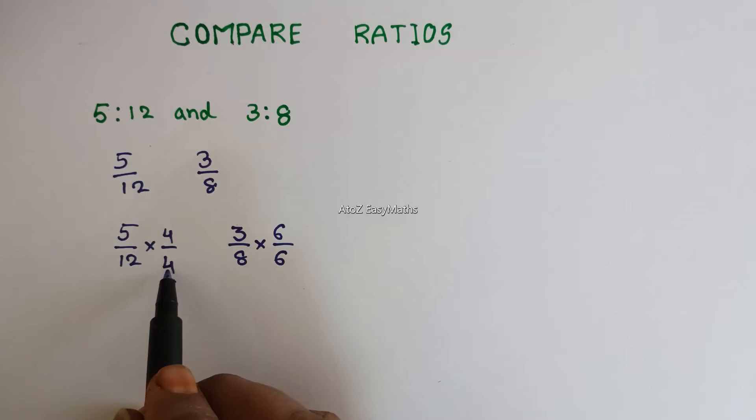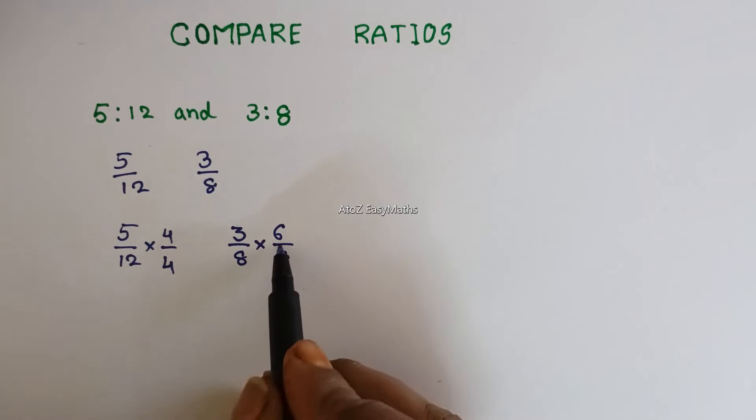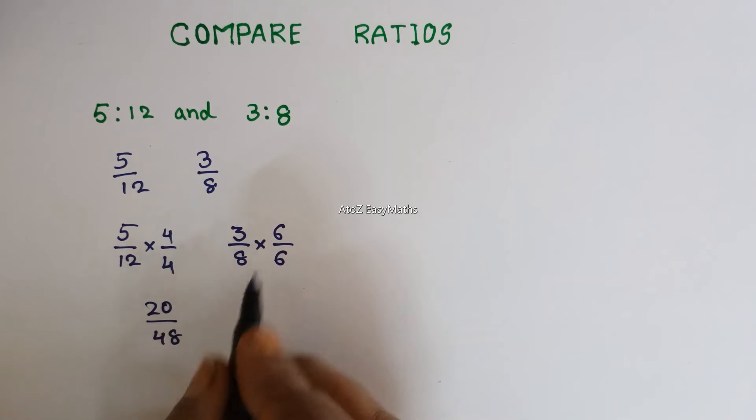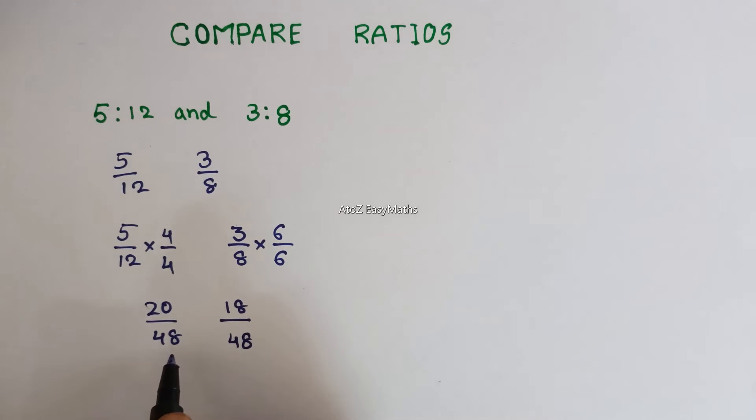Because of that, we are multiplying by 4 here and multiplying by 6 here. 5 times 4 is 20 and 12 times 4 is 48. 3 times 6 is 18 and 8 times 6 is 48. Both denominators are equal.